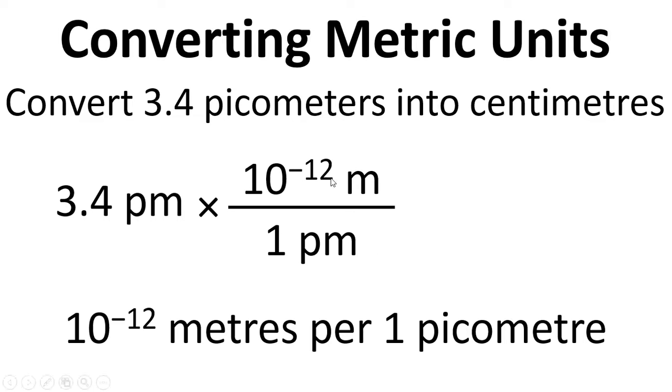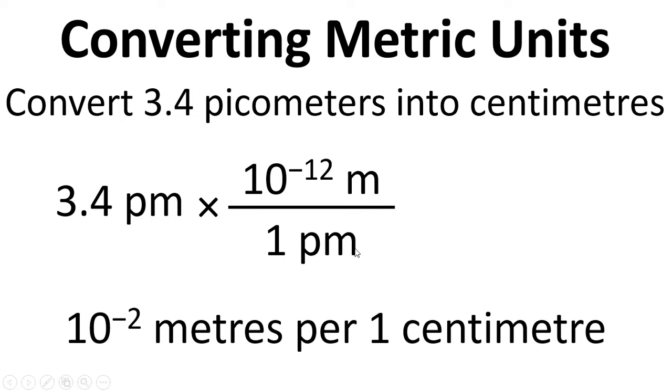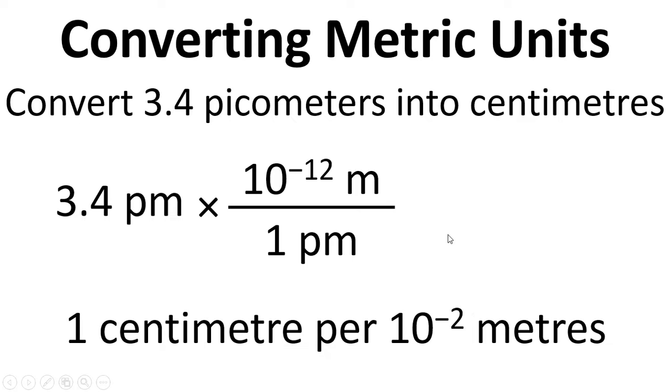So we write down 10 to the minus 12 metres divided by 1 picometre. And we also have 10 to the minus 2 metres for every 1 centimetre. Now we need to write this the other way round because of the way we need to cancel things down at the end. So we're going to say 1 centimetre per 10 to the minus 2 metres.